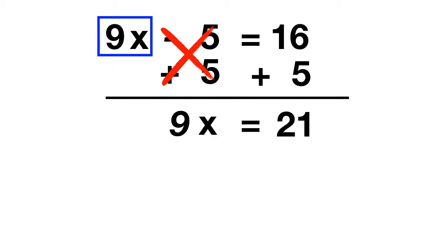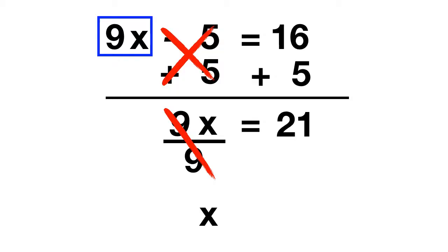Now all that's left is getting rid of this 9. The 9 is being multiplied by x, so to cancel it out, divide by 9. When that cancels out, you're left with just x. And on the other side of the equation, you now have 21 divided by 9. You might just think of writing your answer as the fraction 21 ninths, but there's a better way you can do that.